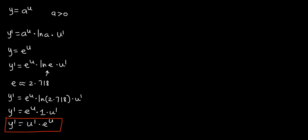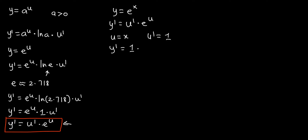Let's look at an example. Say we have y equal to e to the power x. In this case, u is just a variable, which is x. From what we just derived, y' equals u' times e to the power u. Since u equals x, u' is the derivative of x, which is 1. So y' equals 1 times e to the power x, which means y' equals e to the power x. This is the reason why the derivative of e to the power x is the same as e to the power x.